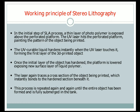The UV-curable liquid hardens instantly when the UV laser touches it, forming the first layer of the 3D printed object. Once the initial layer is hardened, the platform is lowered, exposing a new surface layer of liquid polymer.